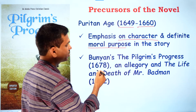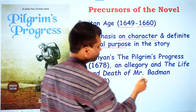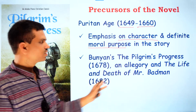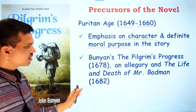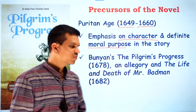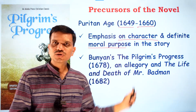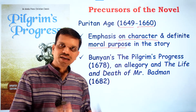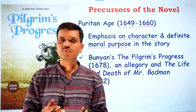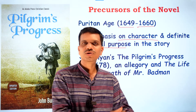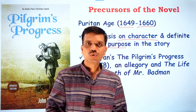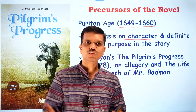Bunyan's second work, The Life and Death of Mr. Badman, is quite different from Pilgrim's Progress, and both works paved the way for the modern novel. In the next video we will talk about how the novel led forward and who were the first novelists. It is very difficult to single out one person as the first novelist, but we will try to understand who wrote novels initially and how they were published.